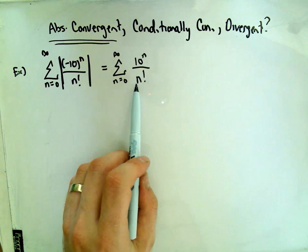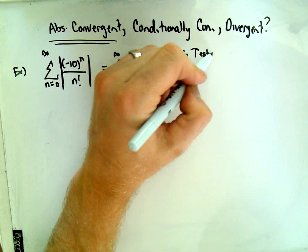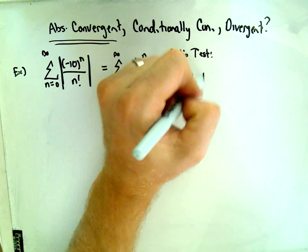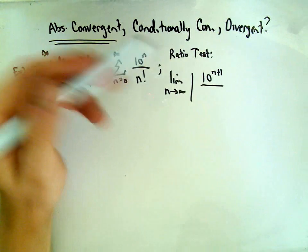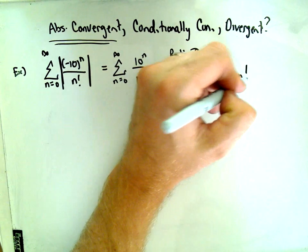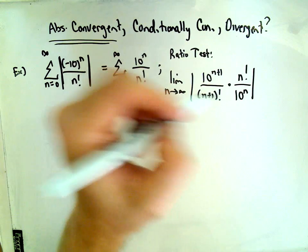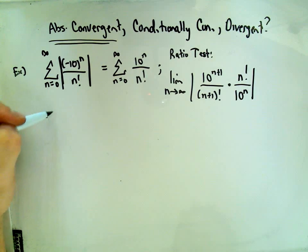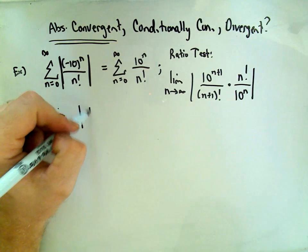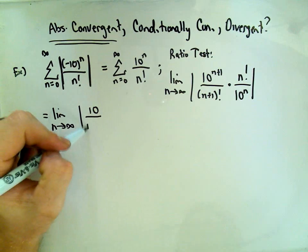We have to figure out: does it converge or diverge? Typically when I see factorials, I like to use the ratio test. You take the limit as n goes to infinity. Everywhere there's an n, I plug in n plus 1, so I get 10 to the n plus 1 in the numerator and n plus 1 factorial in the denominator. I divide by the original, which has the effect of flipping — so I'll have n factorial over 10 to the n. If I compute this limit, I have the limit as n goes to infinity of 10 to the n plus 1 over 10 to the n, leaving a single 10 on top. Simplifying n factorial over n plus 1 factorial just leaves n plus 1 in the denominator.